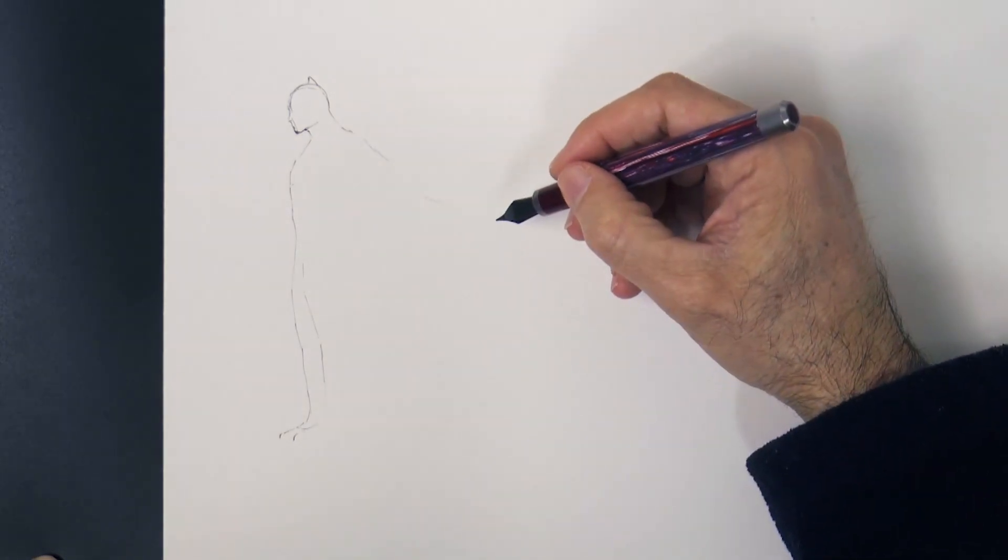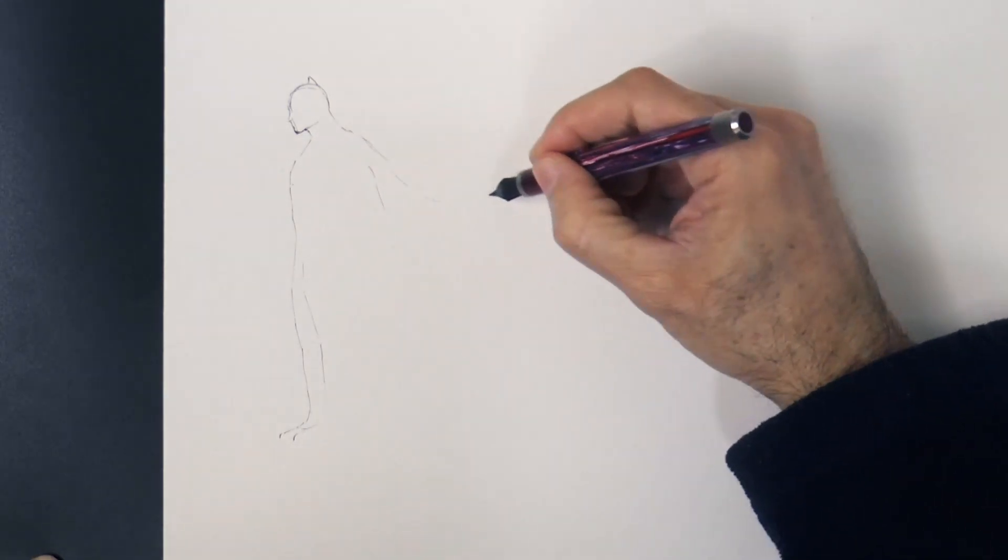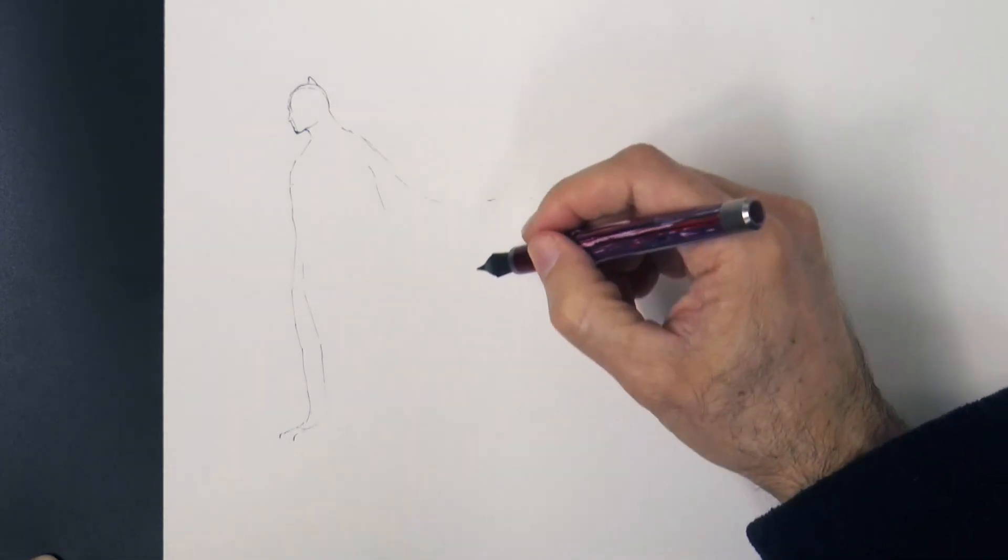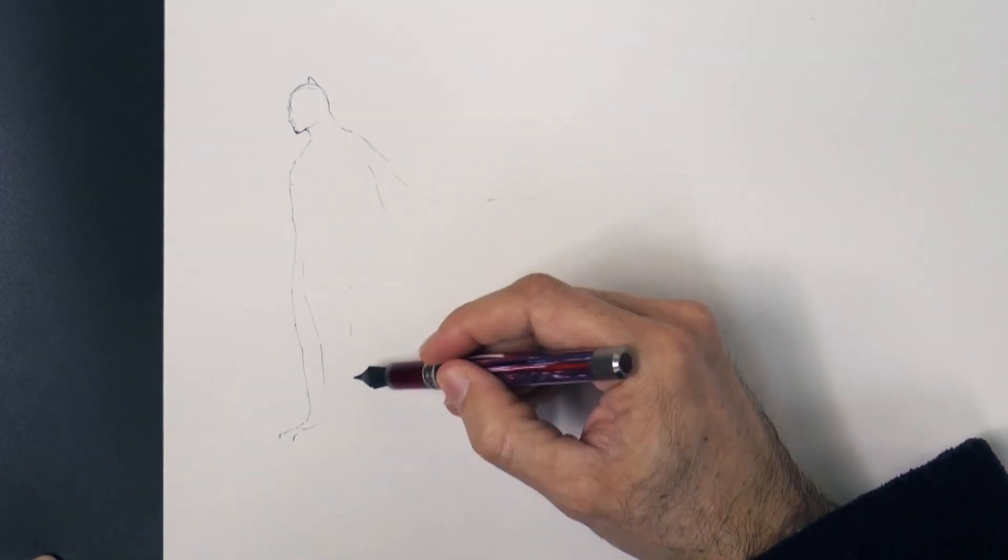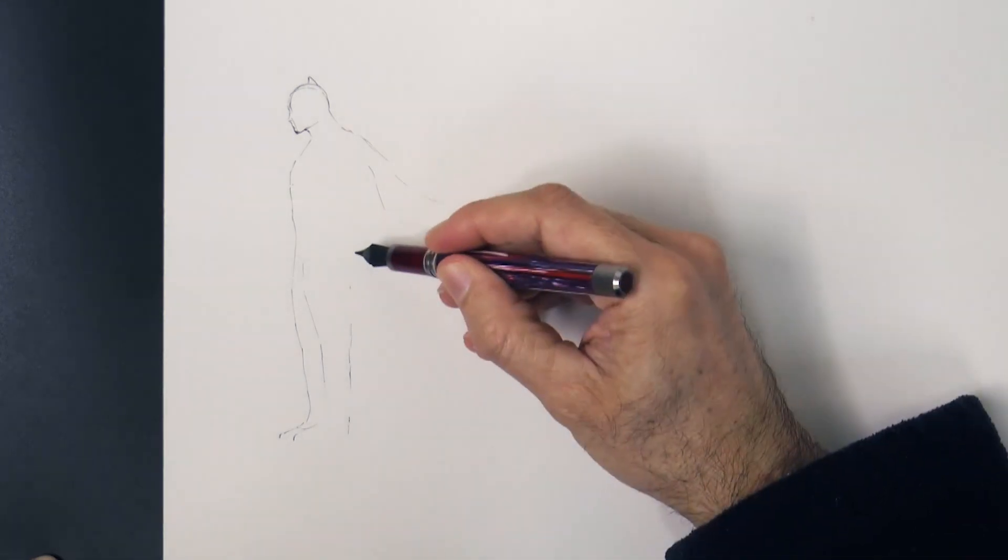This cloak will be flying with the wind. I'm doing all this sketch with the back of the nib, so that it draws very thinly, in case I make mistakes.